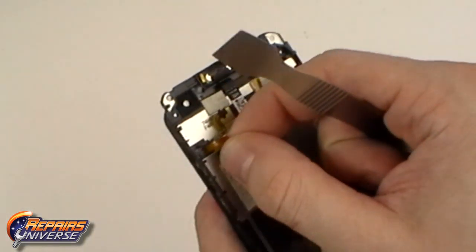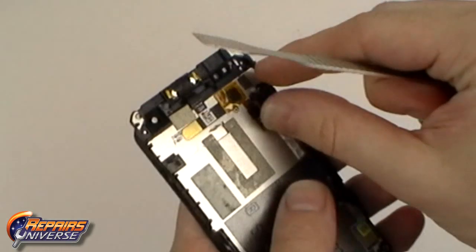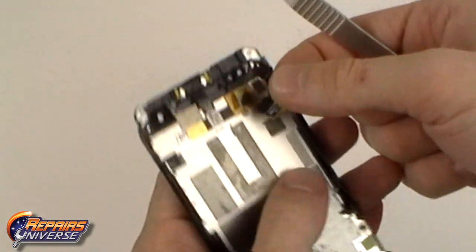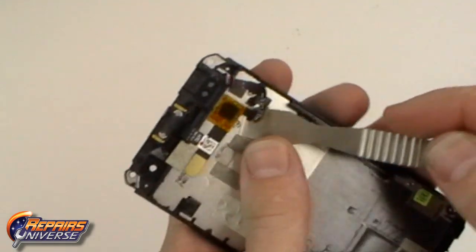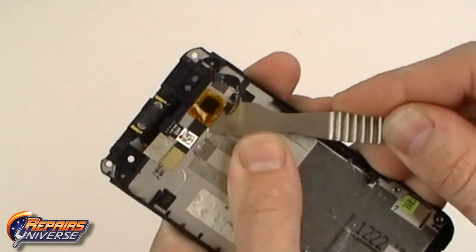We can now remove the volume button flex cable. Using a pry tool we can now lift away the touch screen flex cable from the back of the housing.